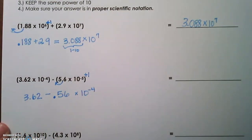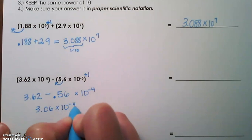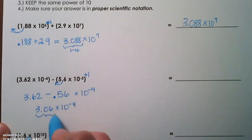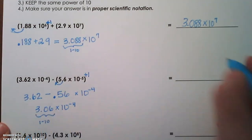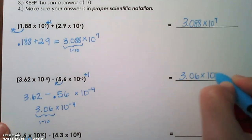When we subtract 3.62 minus 0.56, we get 3.06 times 10 to the negative fourth power. Double check your factor. Is it between 1 and 10? It is. So our answer is 3.06 times 10 to the negative fourth.